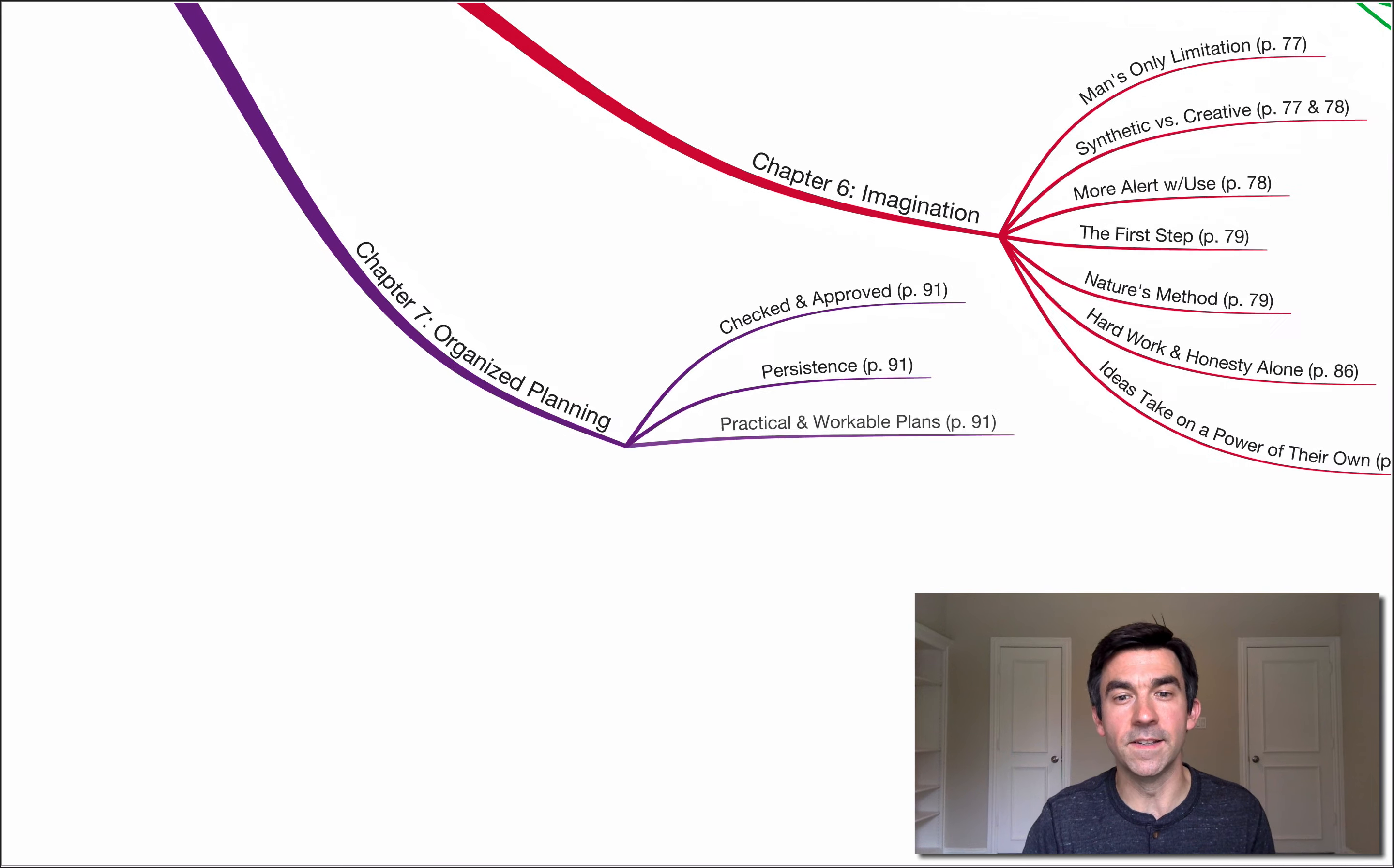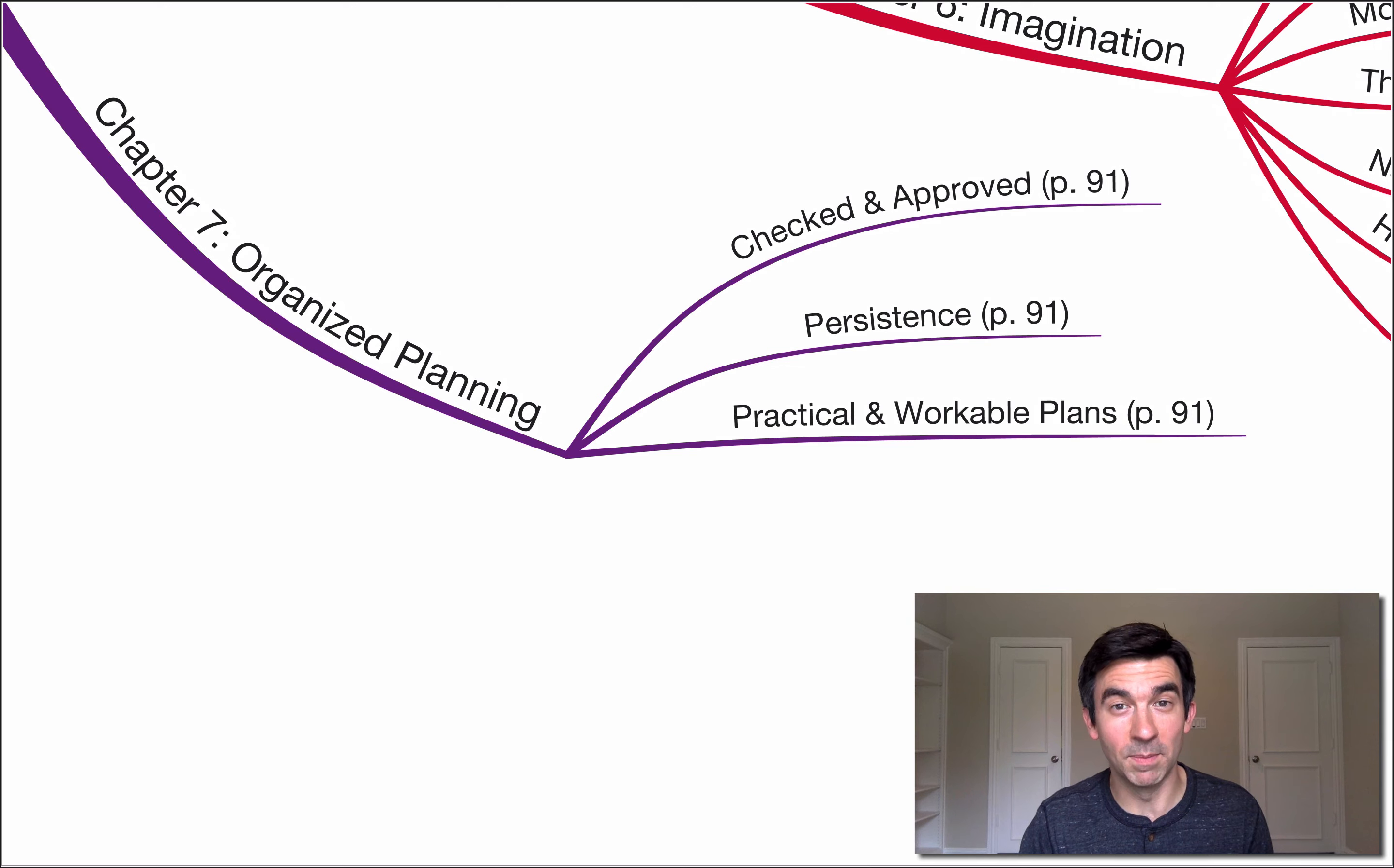Third key point here is practical and workable plans. He goes on to say that the most intelligent man living cannot succeed in accumulating money nor in any other undertaking without plans which are practical and workable. So as you look at your plans, are they practical? Are they workable?